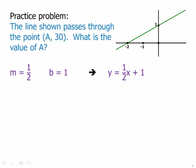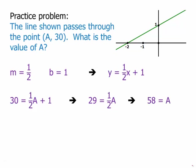Now we have an equation, so we can plug in. We plug in a for x and 30 for y, subtract one, and then multiply by two to cancel the one-half, and we get a = 58. That's the answer.